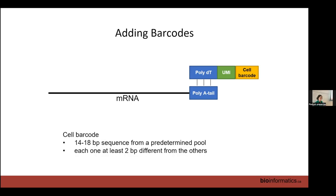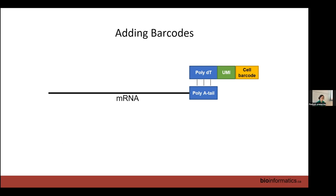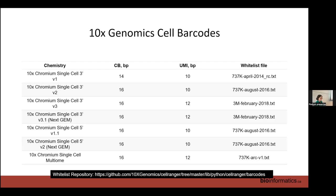We then add a cell barcode — 14 to 18 base pair sequences from a predetermined pool — ensuring at least two base pair differences between any two cell barcodes. This makes it much easier to determine which cell our RNA reads come from despite sequencing errors. For 10x Genomics, there are different whitelists depending on which chemistry you used, and you need to make sure you're using the right one.